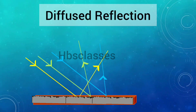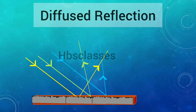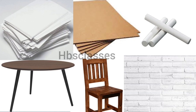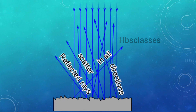You can see here that incident rays, after striking the surface of the cardboard, are reflecting in different directions. After reflection, the reflected rays are not parallel to each other. Diffuse reflection of light takes place from rough surfaces like that of paper, cardboard, chalk, table, chair, walls, etc. When a parallel beam of light rays falls on the rough surface of a sheet of paper, the light is scattered by making reflected rays in different directions.